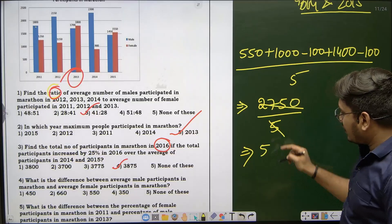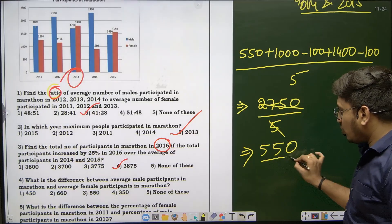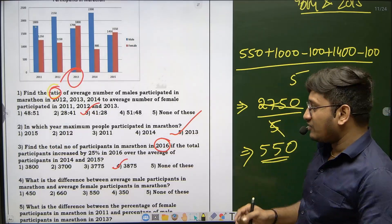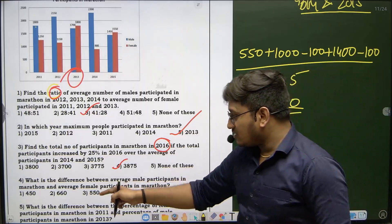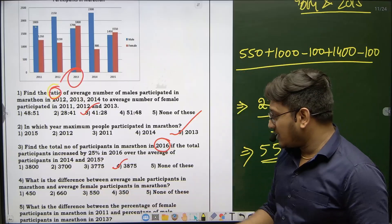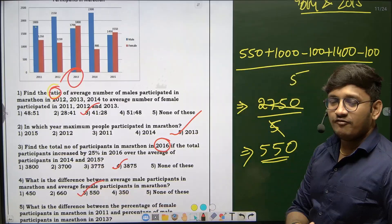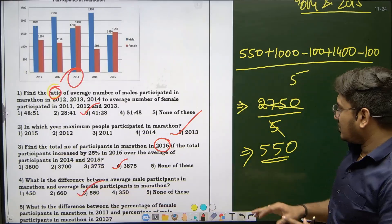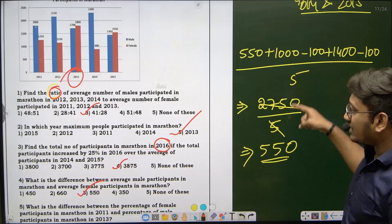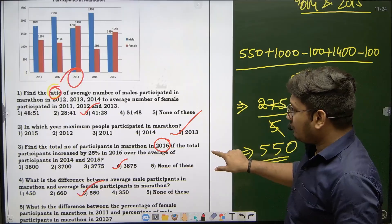2750 divided by 5 equals 550. The difference between average male and female participants is 550. That's the answer for the fourth question. I hope you're all clear with this.